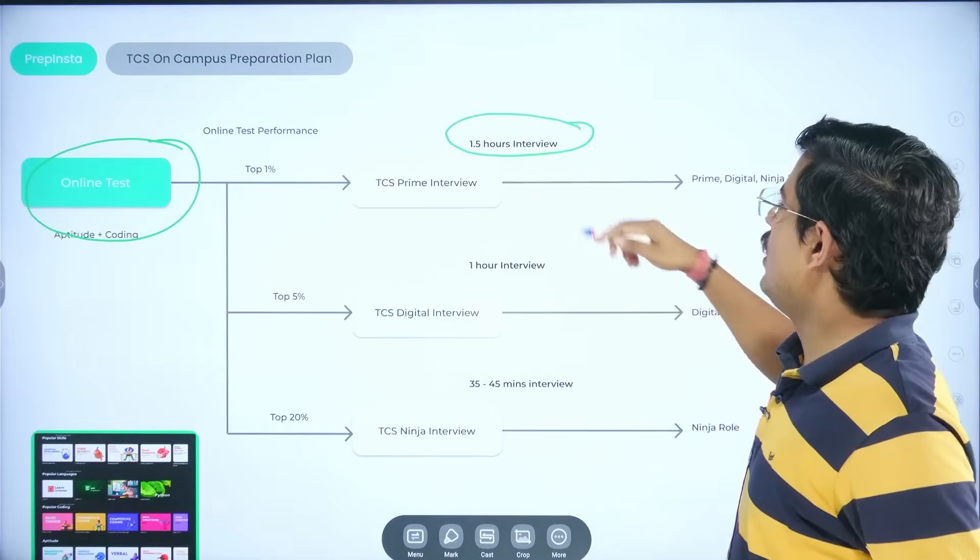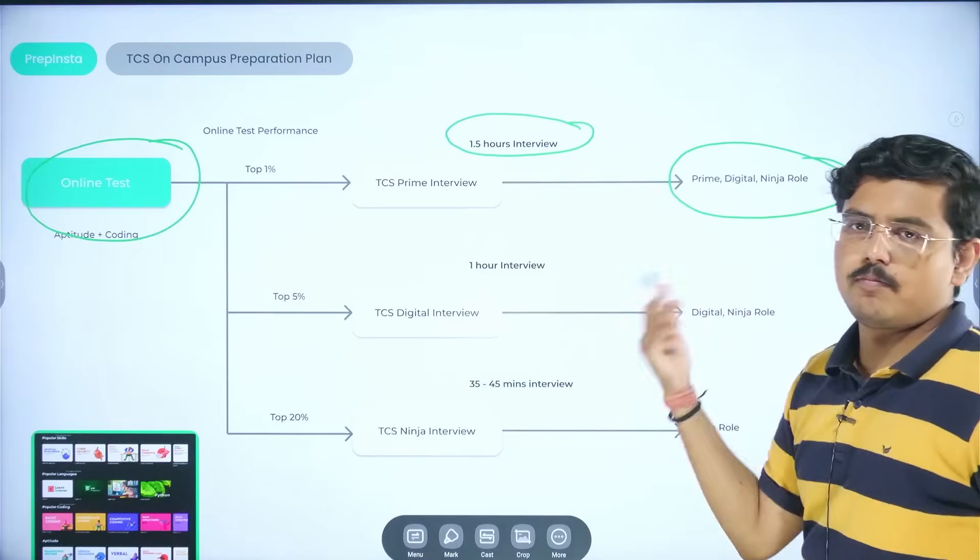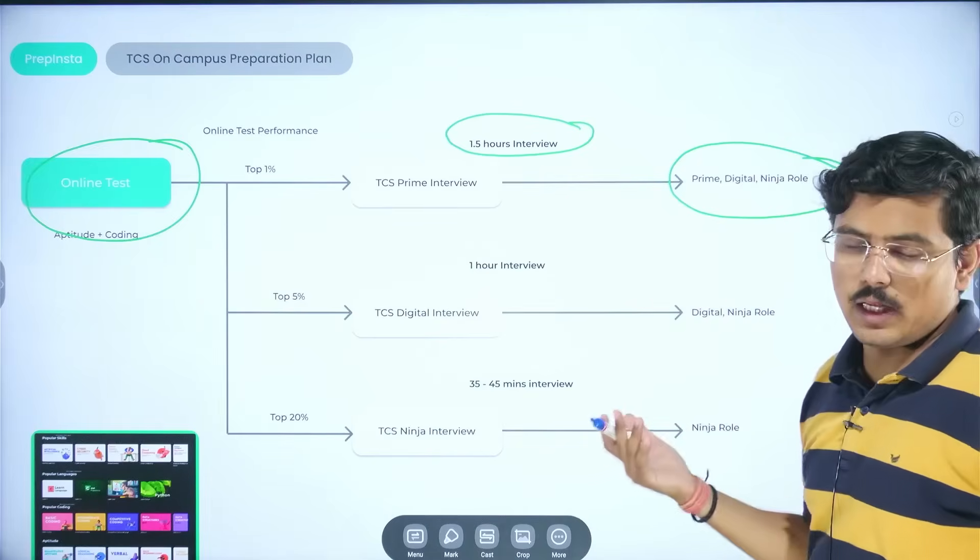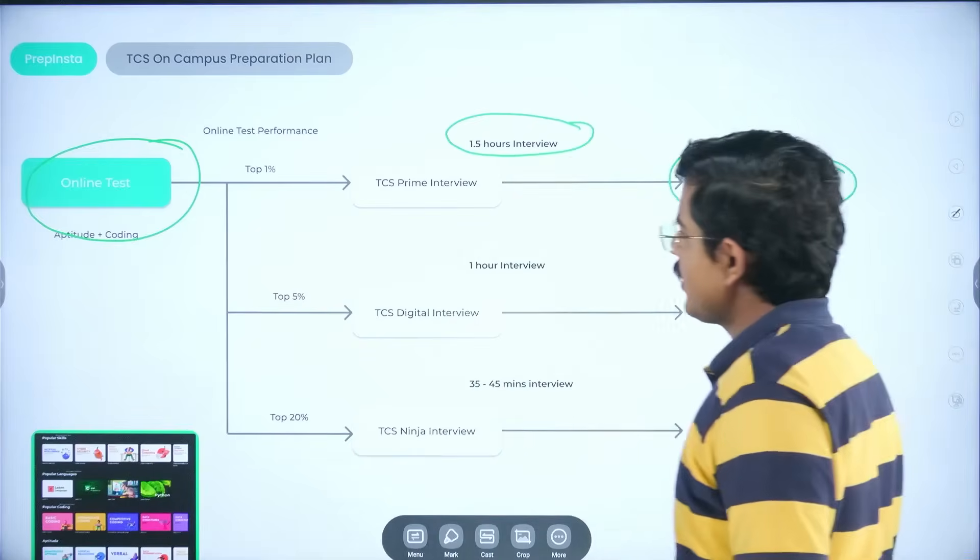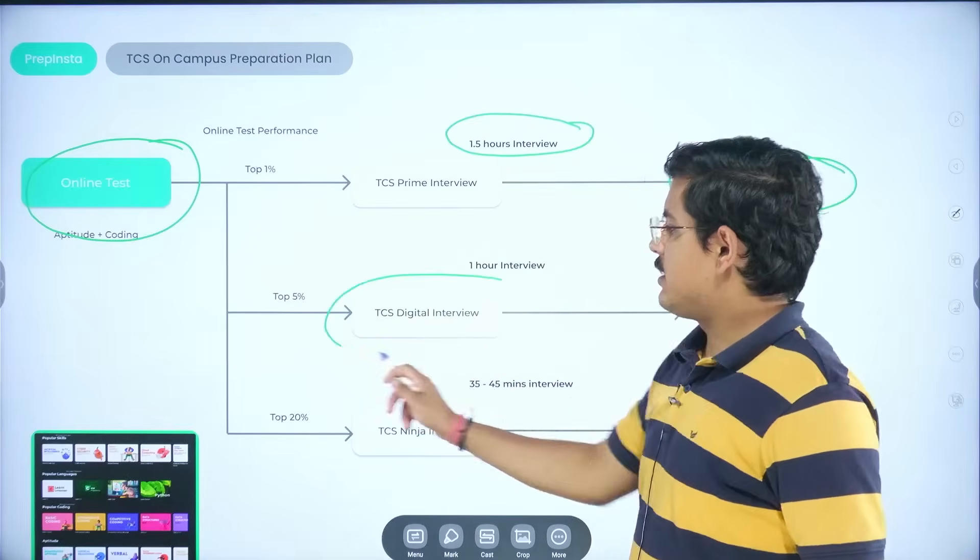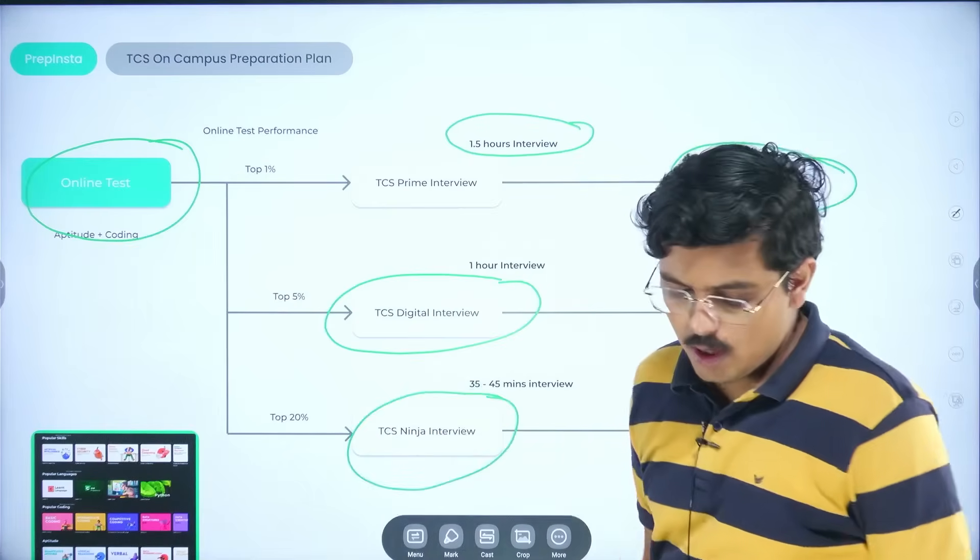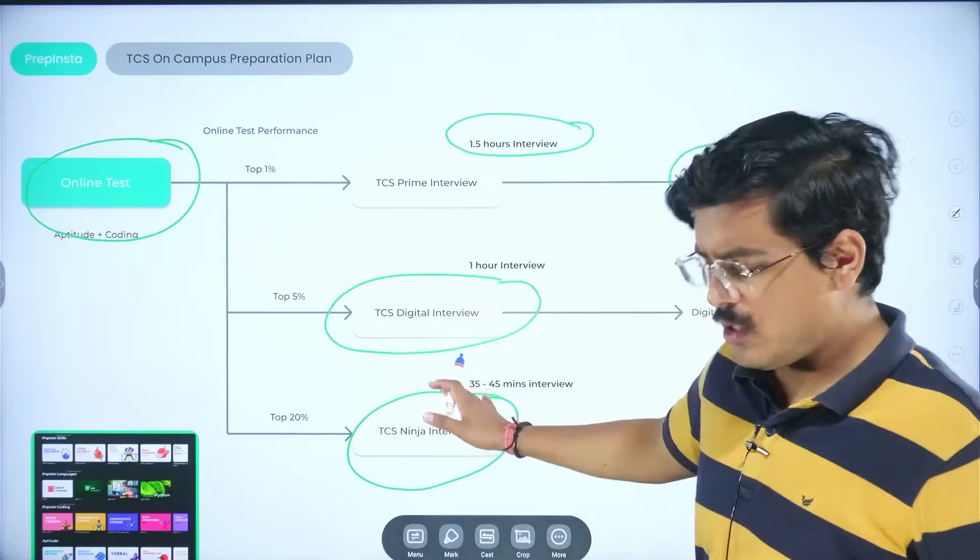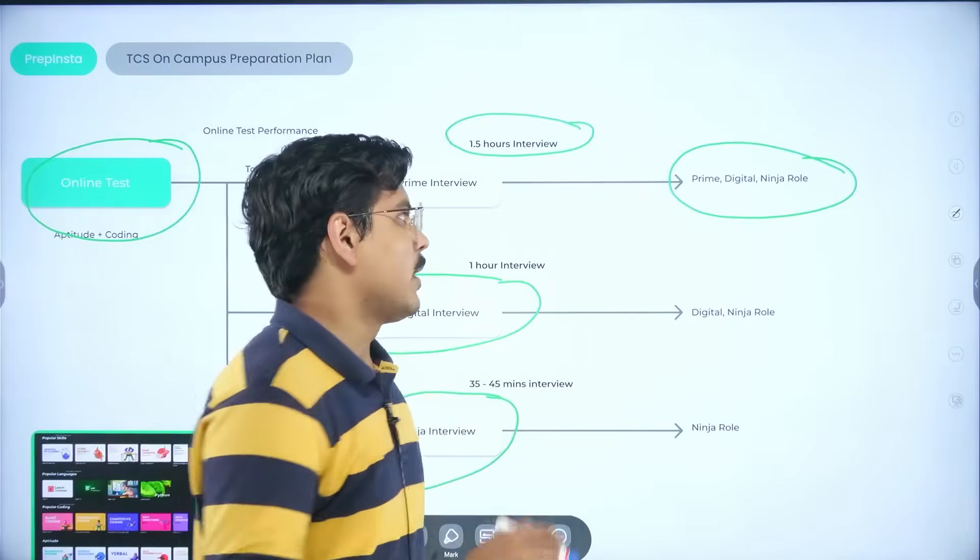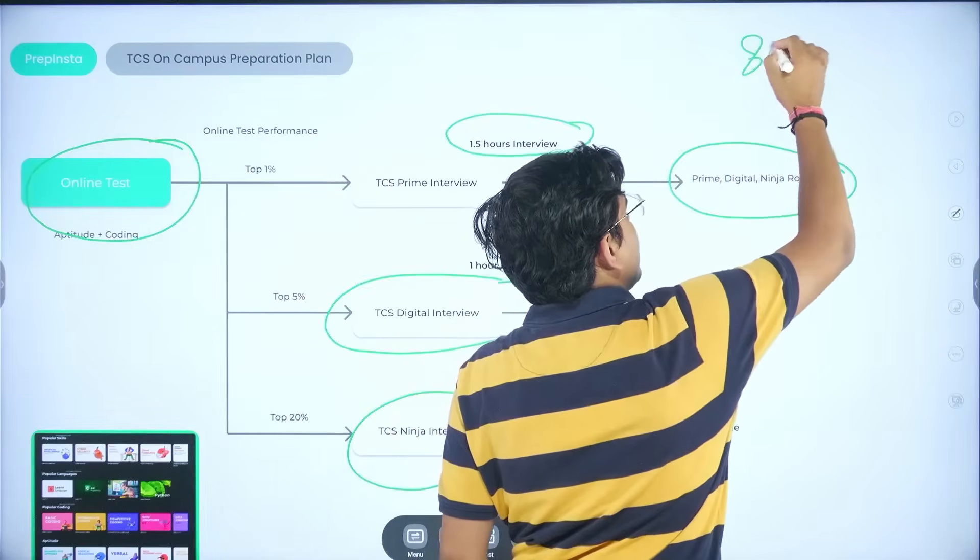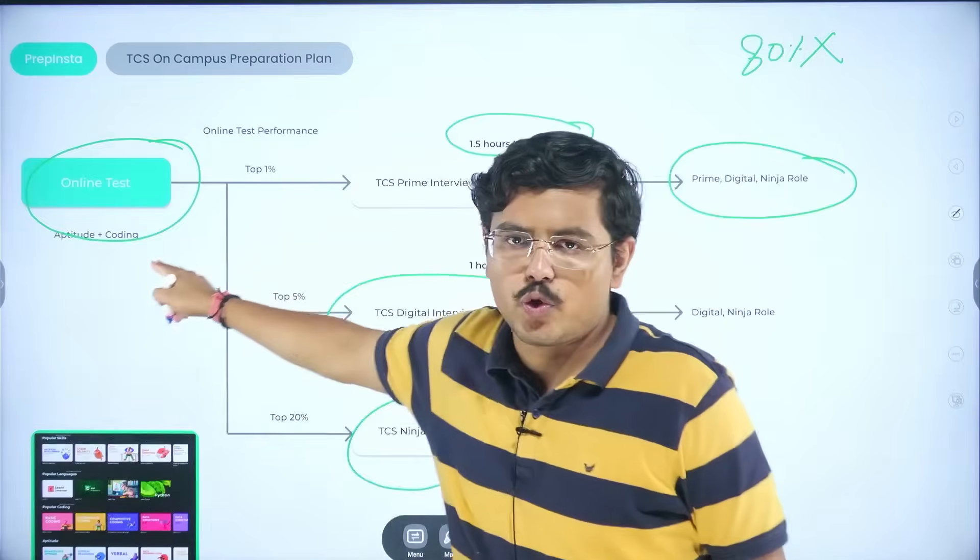You generally give an online test which is based on aptitude and coding. Then you have basically top 1% people entering the TCS Prime interview. Generally, it is 1.5 hours of interview. And based on your performance, you're allotted the role. If you're not clearing it with flying colors, you might end up in digital or ninja. Top 5% would go ahead to TCS digital interview. And top 20% would get to TCS ninja interview.